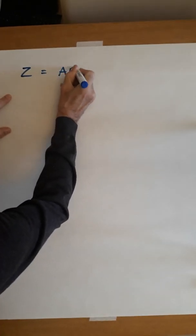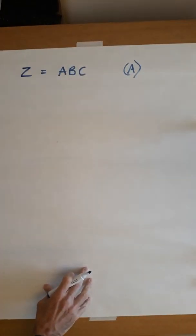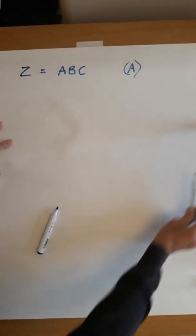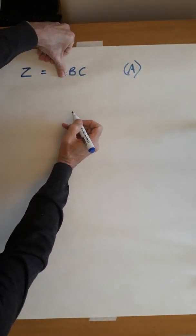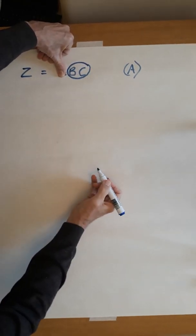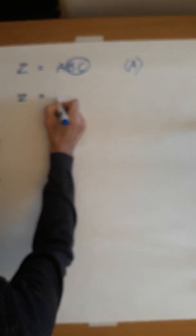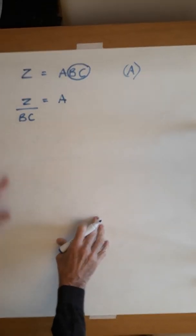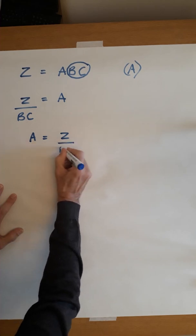So let's take a totally different formula. Z equals ABC. And I want to make the letter A our new subject. So in this case, if you want to draw on the cross, you can. I'm not going to draw it in. Just imagine it's there. And we want A on its own. And it's on the top line. So leave it there. And we want to move these two away. So those two are going to go to the other side underneath. So Z equals A, and the B and the C move underneath. Let's just write it in the correct order. Subject on the left. A equals Z over BC.